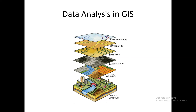The three formats of vector data are point, line, and polygon. The first subtype represents the point, the second one represents the line, and the third vector format represents the polygon. These are the three subtypes we have considered and analyzed.